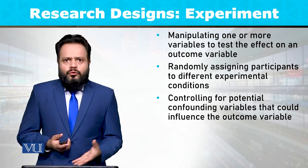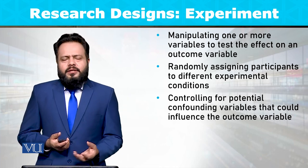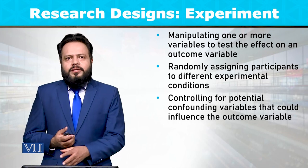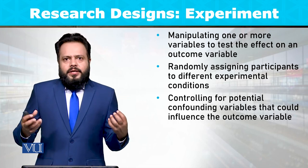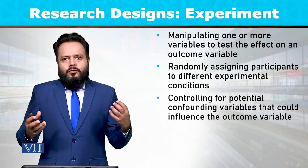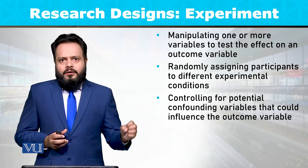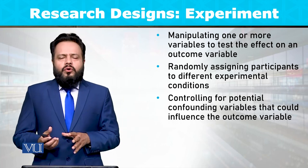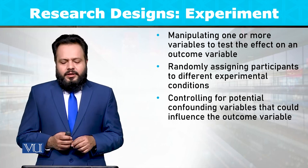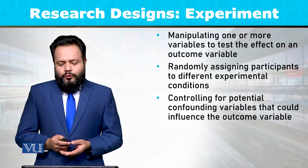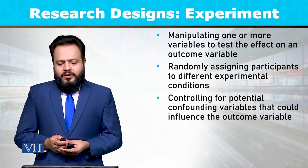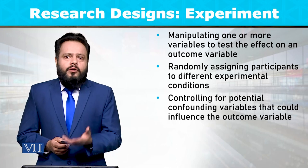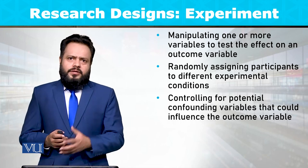This means a control group can be made, and multiple groups can be formed. This allows us to see how a particular variable can affect the outcome, and to control the effect of potential confounding variables that could influence the outcome of other variables.